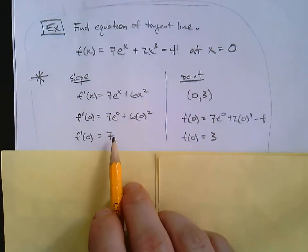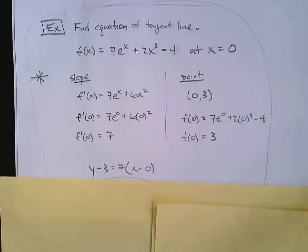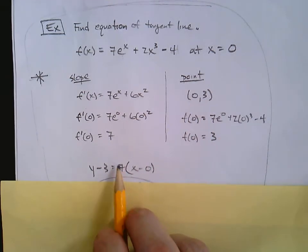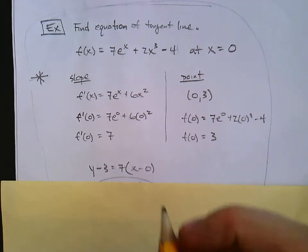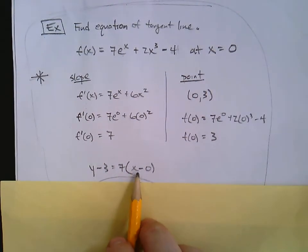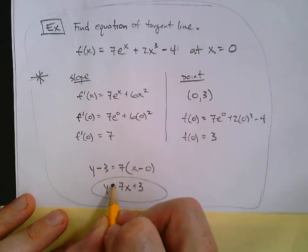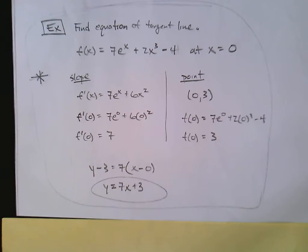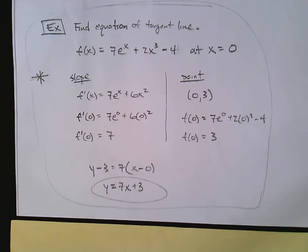Now that we know the slope and we know a point, we can use the point slope form. y minus y1 equals m times x minus x1. We've done this. y minus 3 equals 7 times the quantity x minus 0. Solve for y. And this one's nice with the 0. Here y equals 7x plus 3. And we got the equation of the tangent line to this function at 0. Pretty cool. Okay. Let's stop this video here. We're going to learn derivatives of logs next. See you next time.